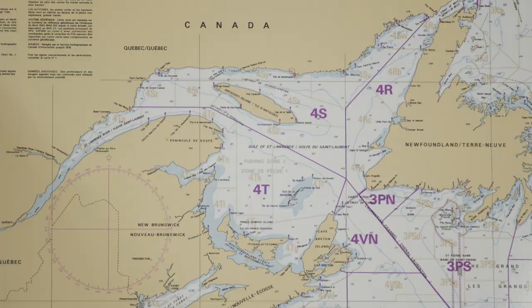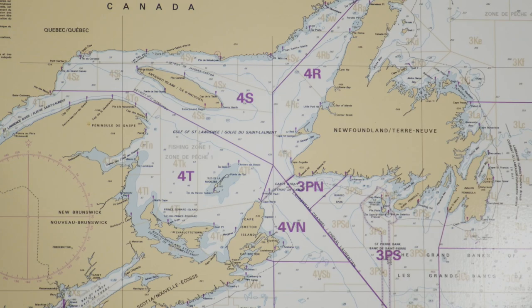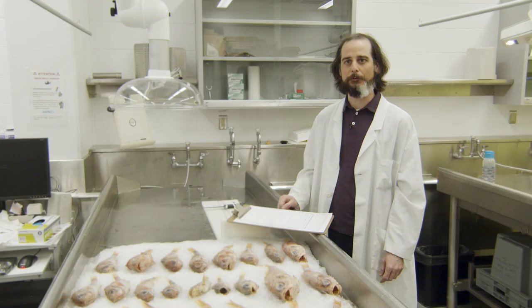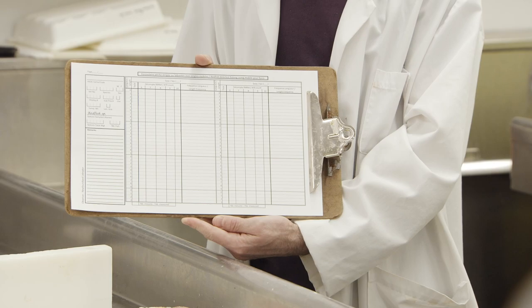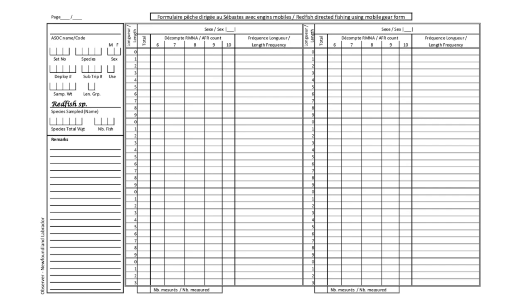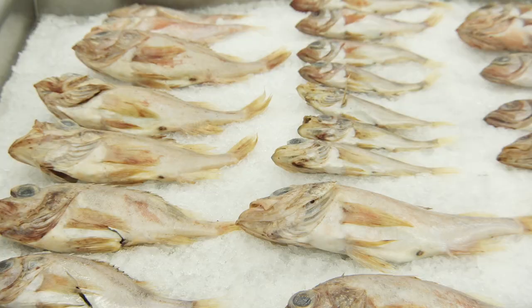The AddSeaObserver program includes a specific form for redfish-directed fishing trips in units one and two. This form allows for the recording of the length frequency as well as the anal fin ray count on a sample. Here's the form for the Newfoundland and Labrador region. Please note that a different form is used for the Quebec region. The body of the form is the same as well as the way to complete it — the only difference is in the header. These forms should be printed on waterproof paper and completed using a pencil.